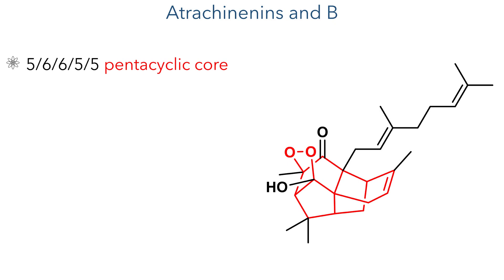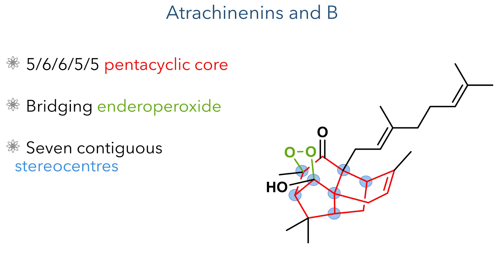This compound presents several challenges for the synthetic chemist, including a 5-6-6-5-5 pentacyclic core containing a bridging endoperoxide. This pentacyclic core also contains seven contiguous stereocenters, requiring careful planning of the route in order to install all these centres with the correct configuration.